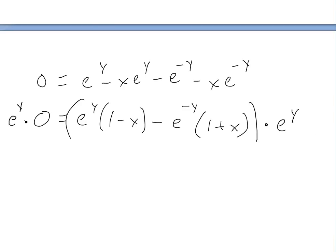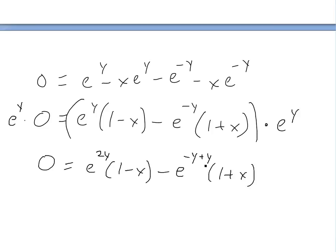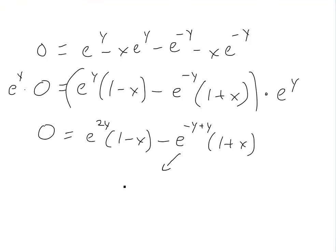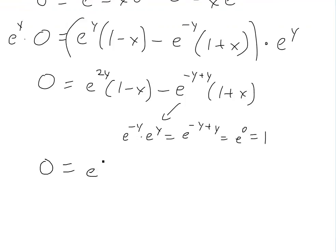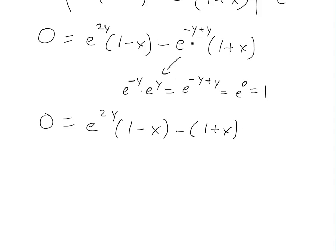Multiplying both sides by e to the y, the left side stays zero. On the right, e to the y times e to the y gives e to the 2y times (1 minus x), and e to the negative y times e to the y equals e to the zero, which equals 1, giving us 1 times (1 plus x). So we have zero equals e to the 2y times (1 minus x) minus (1 plus x).